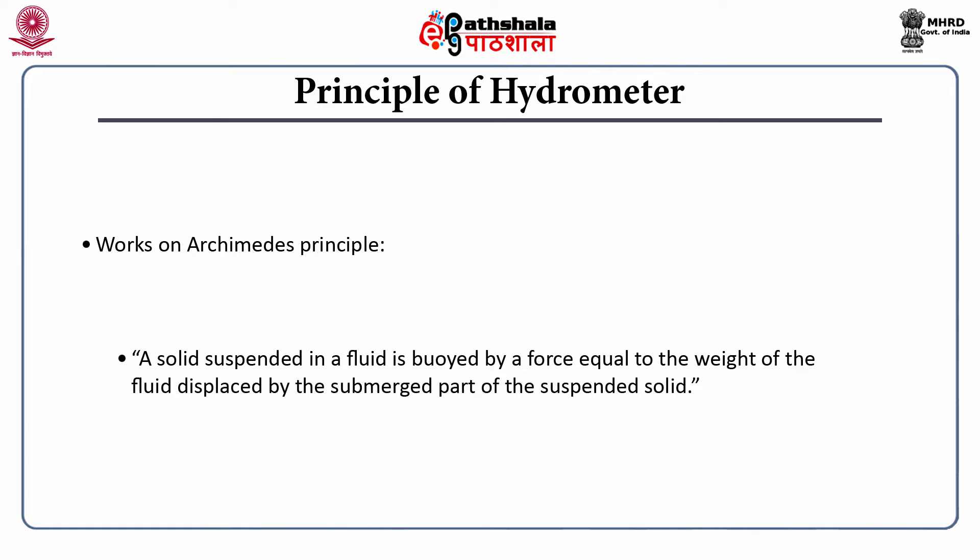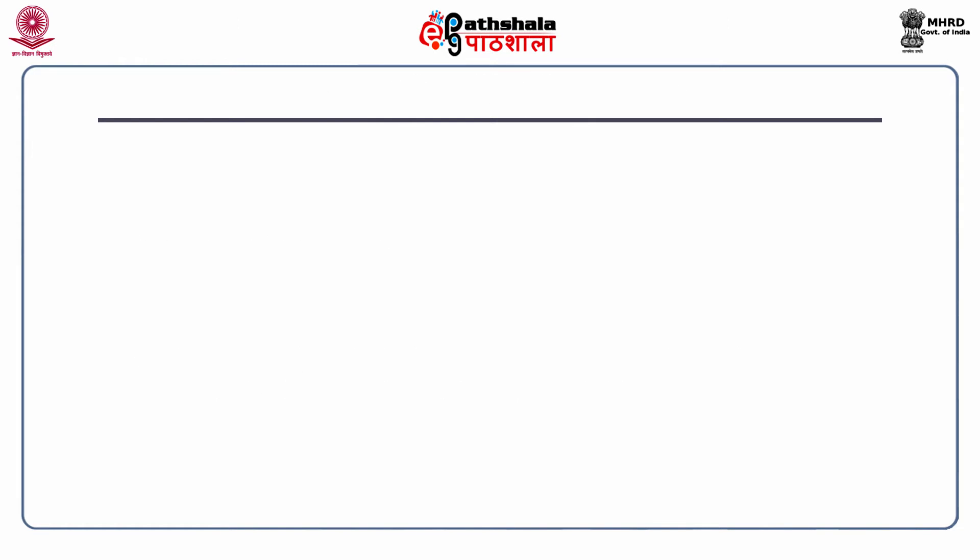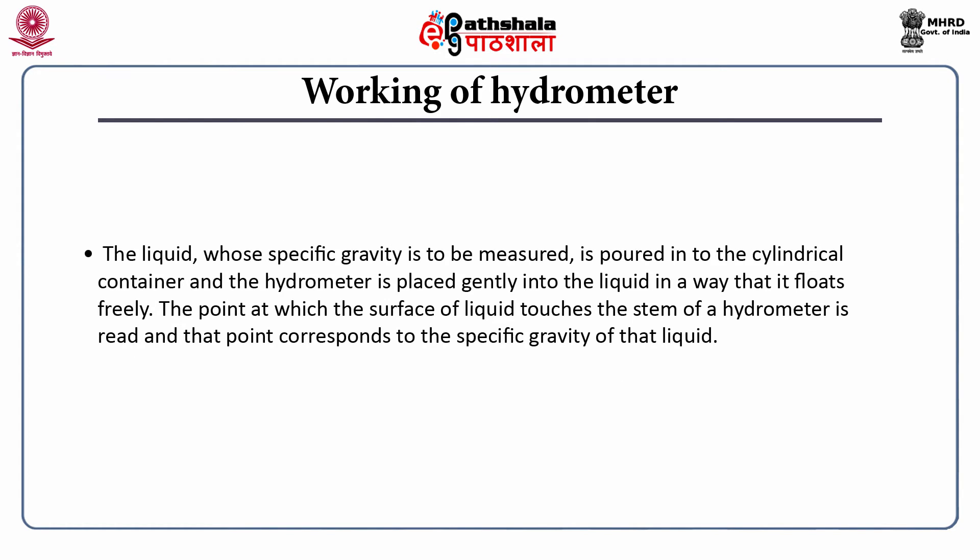If you are suspending a solid in a fluid, it would displace some amount of fluid equal to the weight of the fluid displaced by the submerged part of the suspended solid. Higher the submergence, the higher the weight of the fluid displaced. For working of the hydrometer, the liquid whose specific gravity is to be measured is poured into a cylindrical container, and the hydrometer is placed gently into the liquid so that it floats freely.